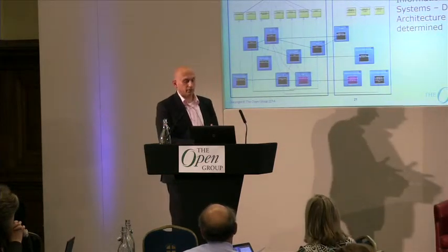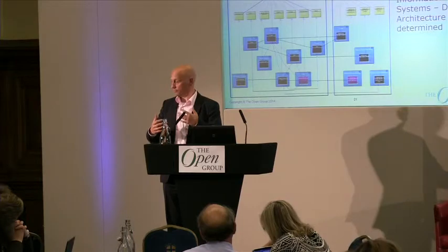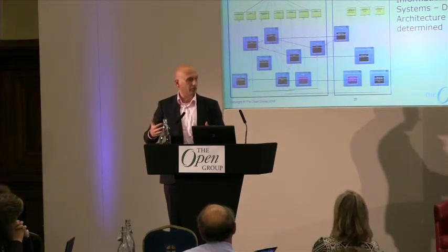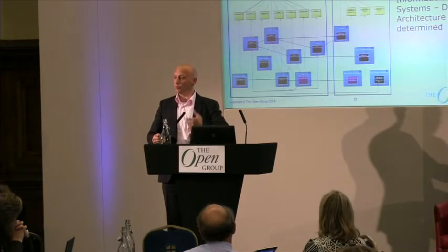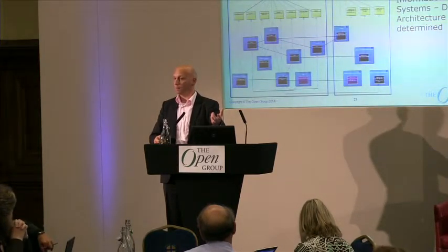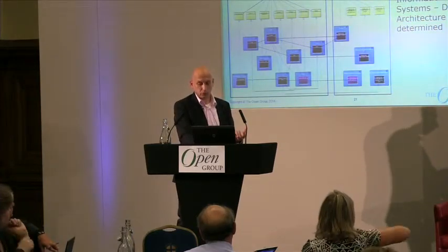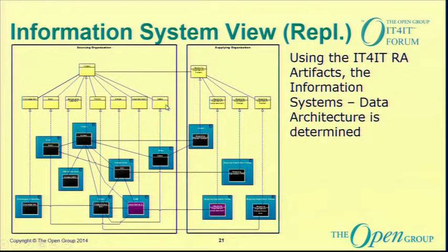Another interesting finding is the need to connect incidents to defects. In the agile world, if something happens in operations, you create an incident, and sometimes that incident needs to be handled as a defect in the R2D value stream. When I looked at the reference architecture, I noticed a weak conceptual link between incident and defect, but at the artifact level there's no connection. This raises the question: do we miss something in the reference architecture, or do we need to explain it better? That's exactly what the work group does — uses a scenario to surface these issues.